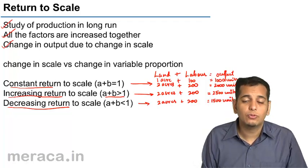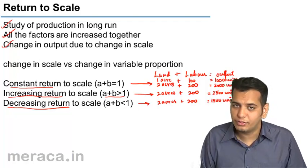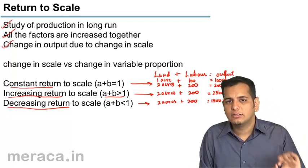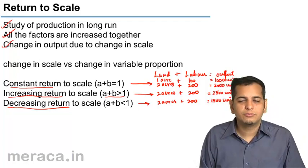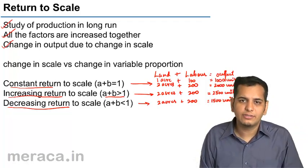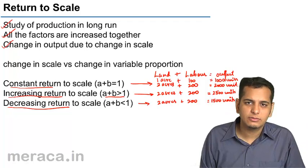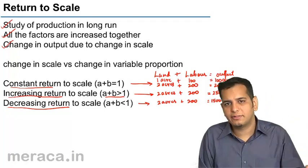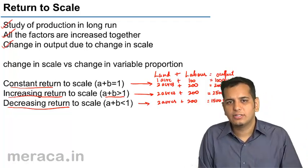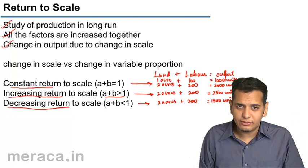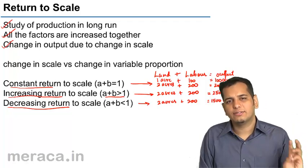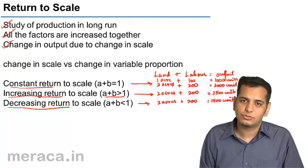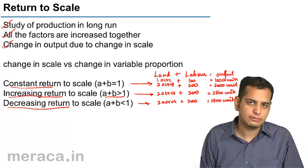So the law of returns to scale has three circumstances, three conditions, three categories. The first is constant returns to scale, the second is increasing returns to scale, and the third is decreasing returns to scale.